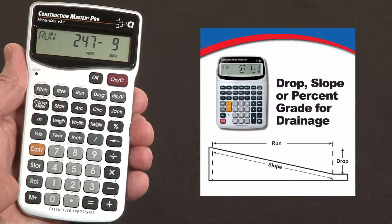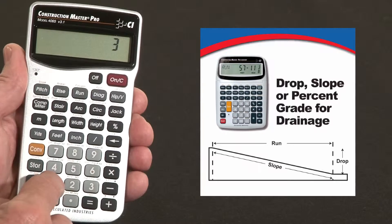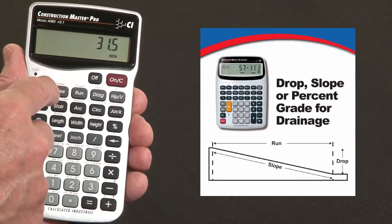And you've taken a shot with your level and you find that it's 31.5 inches lower at the far end of the lot than at this end. 31.5 inches is our vertical change or our rise.